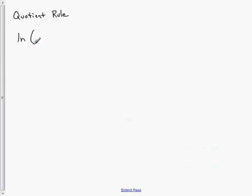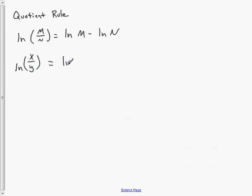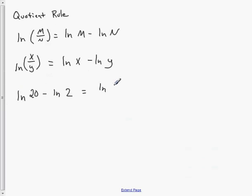The quotient rule says: if multiplication is addition, then division is subtraction. ln(M/N) = ln(M) − ln(N). For example, ln(x/y) = ln(x) − ln(y). Going backwards: ln(20) − ln(2) = ln(20/2) = ln(10).